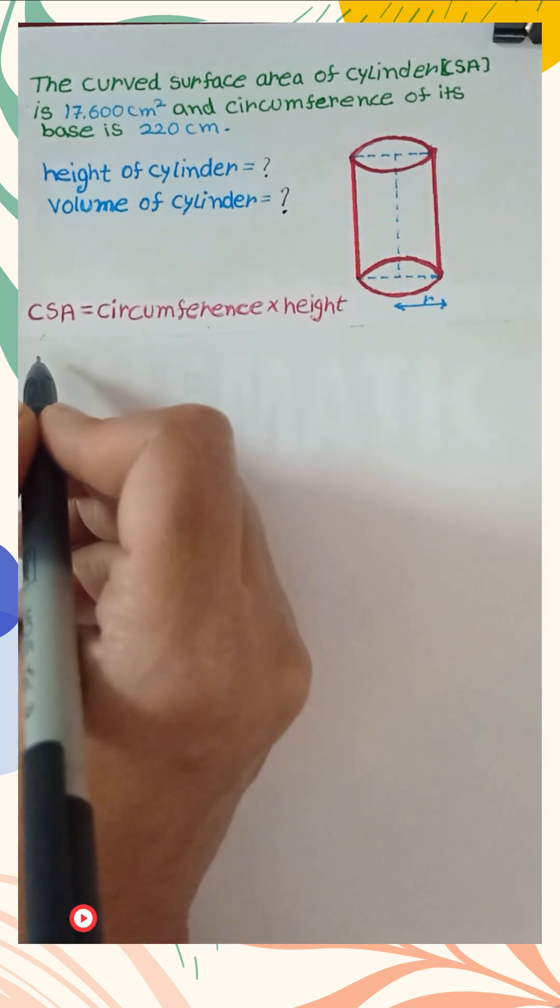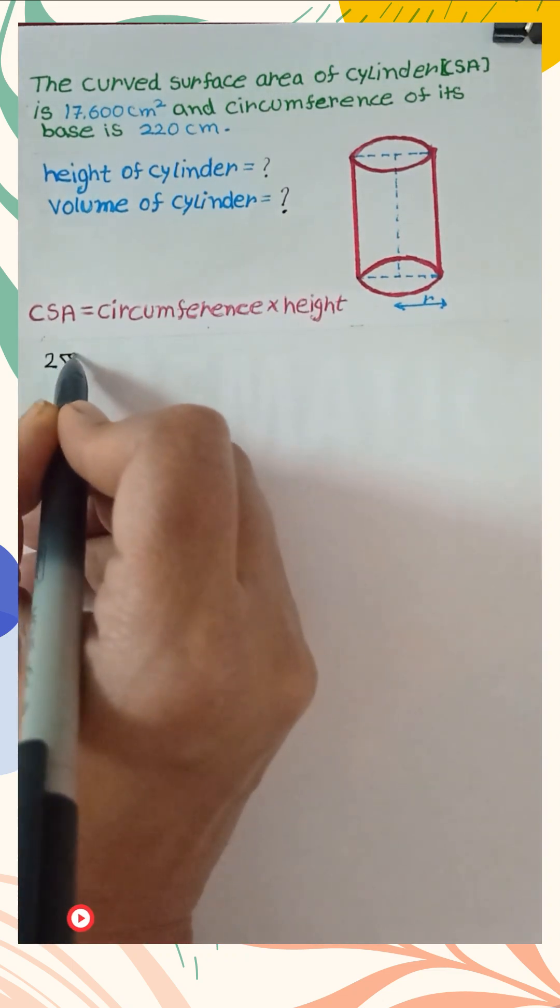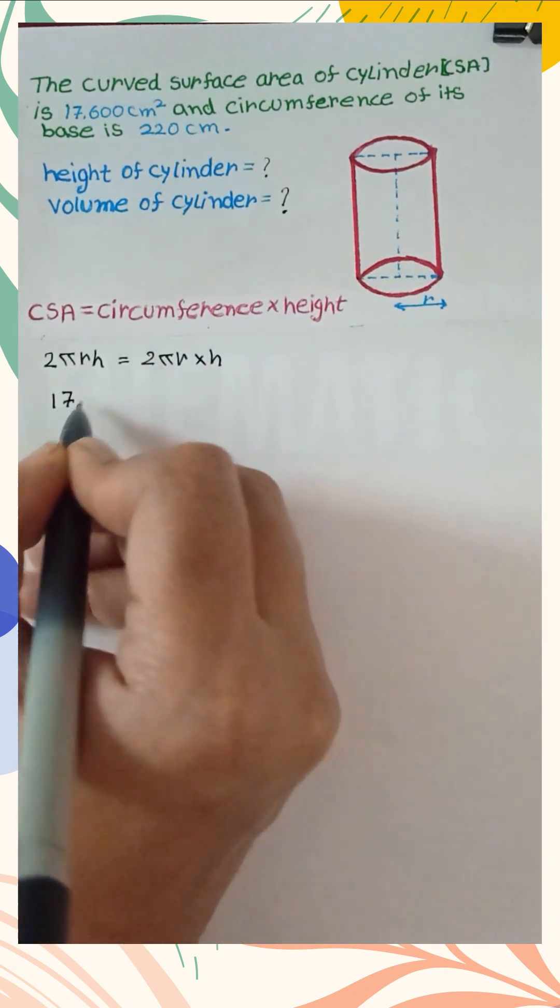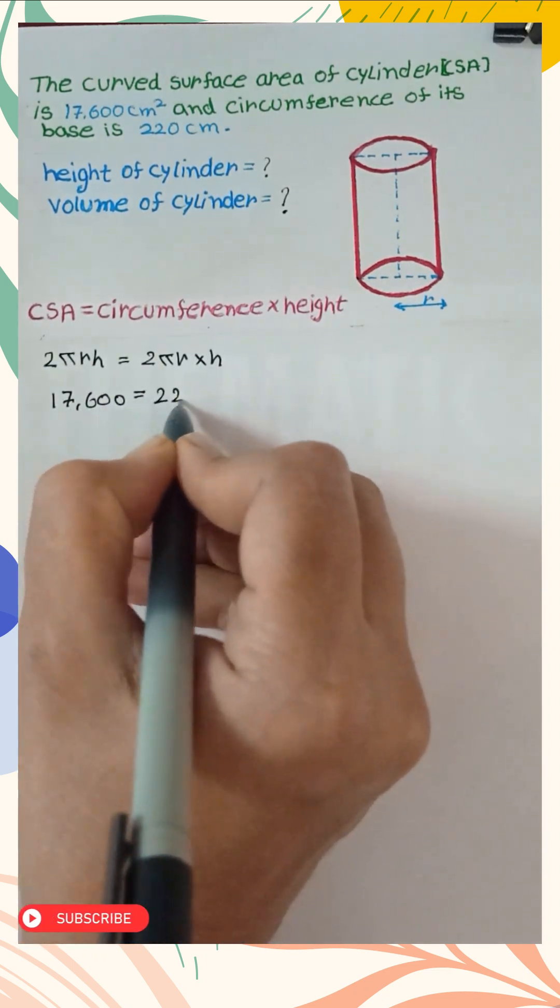Curved surface area equals circumference times height. 2πrh = 2πr × h. Put the value of CSA and circumference to find the value of height of the cylinder.